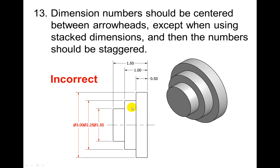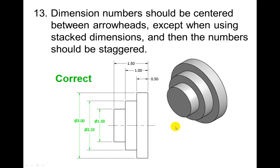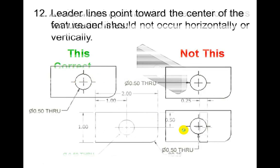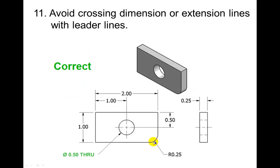Dimension numbers should be centered between arrowheads except when using stacked dimensions, and then the numbers should be staggered. It's very difficult to read this compared to the correct way where they have staggered them, and you can read it a little bit easier. Notice that these are diameters because they're circles. And then earlier whenever we looked at the radius here, notice this is a radius because it's an arc, and that's why it's dimensioned with the R. The circle with a line through it indicates the diameter, and this 'through' tells me it goes all the way through.